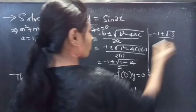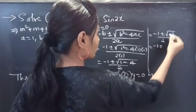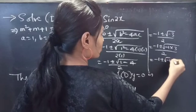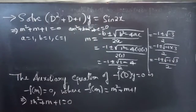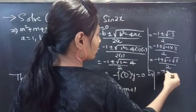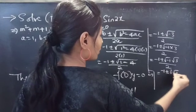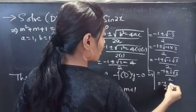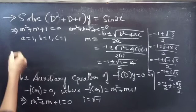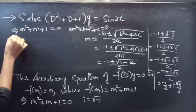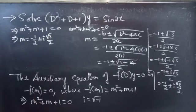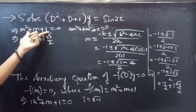We have (−1 ± √(−3)) / 2. We can write √(−3) as √(−1) · √3. Since i = √(−1), replacing gives us (−1 ± i√3) / 2, or equivalently −1/2 ± i·(√3/2). These are a pair of complex conjugates, and m = −1/2 ± i·(√3/2) are the roots of the auxiliary equation.